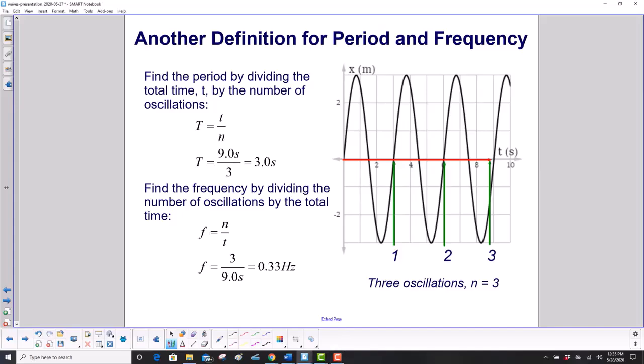So let's do the period first. Our total time is nine seconds. It makes three oscillations. So the period is three seconds. Then find the frequency. The number of oscillations it makes is three. It takes nine seconds to make it. So the frequency is 0.33 hertz. Now, earlier we said that period is one over the frequency. Does that work here? Well, let's see. Frequency is 0.33. So what's one over 0.33 hertz? Well, that's going to be three seconds. So it does work. That's kind of good.